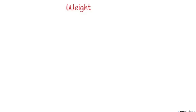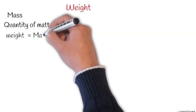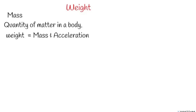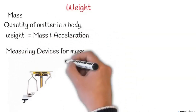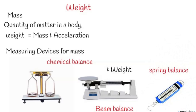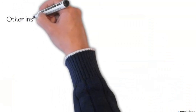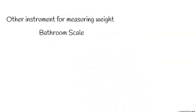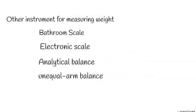For measurement of weight, we can't talk about weight without talking about mass. Mass is the quantity of matter in a body. Weight contains mass and acceleration — the product of mass and acceleration is weight. The instrument used in measuring mass is a chemical balance, while the instrument used in measuring weight is a beam balance or spring balance. We also have other instruments such as the bathroom scale, electronic scale, and analytical balance. For the sake of exams: chemical balance goes with mass, while weight uses beam balance or spring balance.